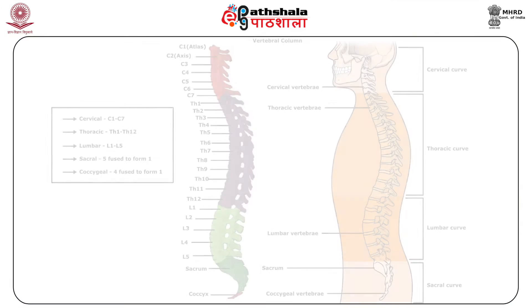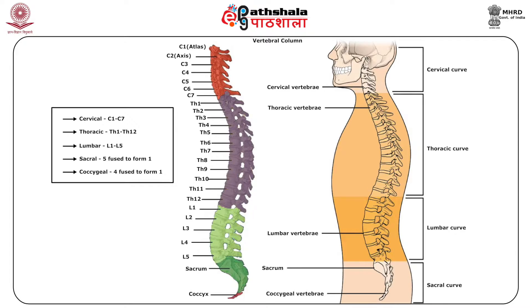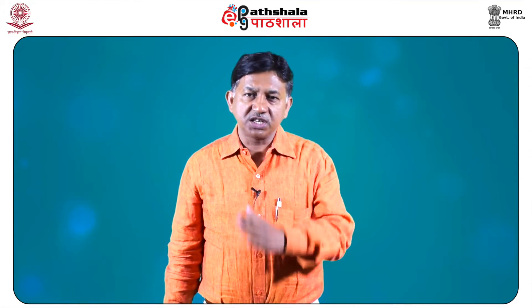Now let's see the vertebrae. The vertebral column is a flexuous and flexible column formed of a series of bones called vertebrae. The vertebrae are 33 in number and are grouped as cervical, thoracic, lumbar, sacral, and coccygeal according to the region they occupy from top to bottom. There are 7 in the cervical region, 12 in the thoracic region, 5 in the lumbar region, 5 in the sacral region — which fuse together to form one bone — and 4 in the coccygeal region. The vertebrae of the upper three regions remain distinct throughout life and are known as true or movable vertebrae, while the sacral and coccygeal vertebrae are termed false or fixed vertebrae, forming two bones: the sacrum and the coccyx.